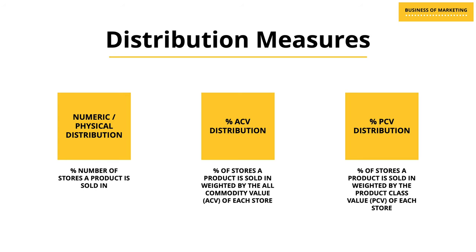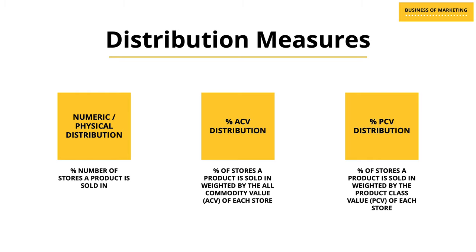Today we learned about three important measures of distribution: numeric distribution, percentage ACV (where we weigh stores by total sales), and percentage PCV (where we weigh stores by the total sales of a particular category). All three of these are measures of the width of distribution — they tell you how widely your product is being distributed in the market.